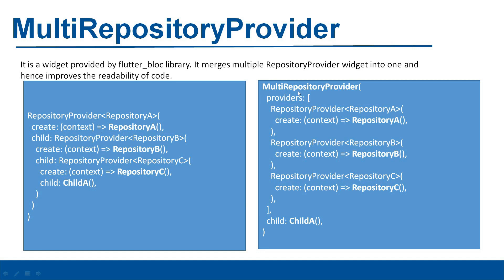To solve that, we use the multi-repository provider widget, which takes a providers argument that takes a list. Inside that list we can pass multiple repository providers — for example, a repository provider providing repository A, a repository provider providing repository B, and so on. This improves the readability of the code. That's it for multi-block listener and multi-repository provider. Thank you so much for watching.